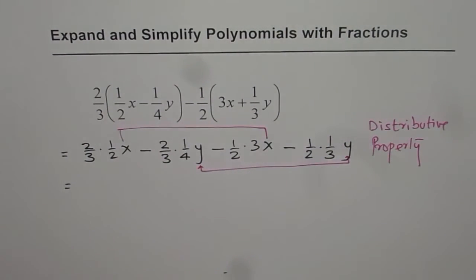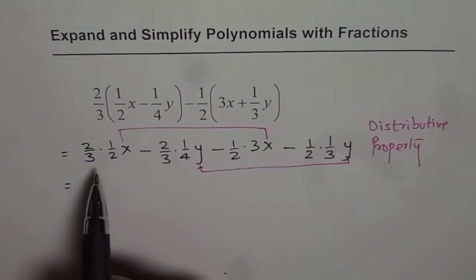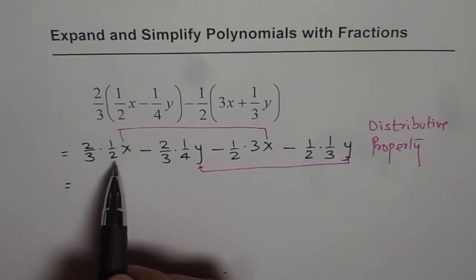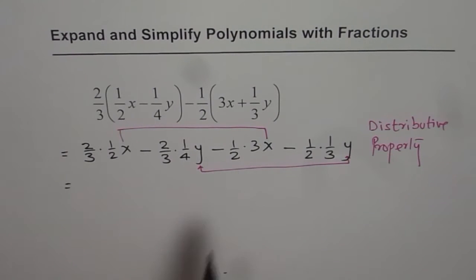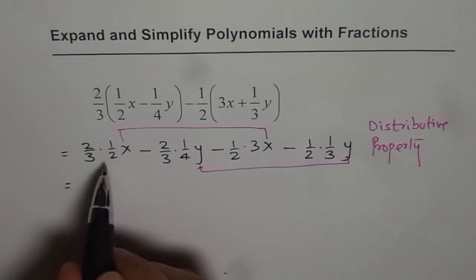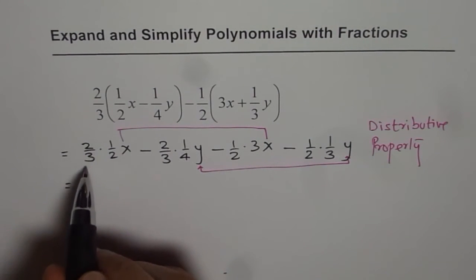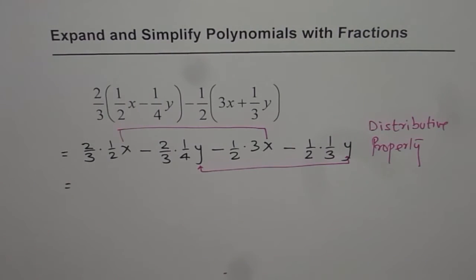So what we will do is we will multiply the fractions and write down the like terms together. So 2 over 3 times half of x, well this can be simplified.